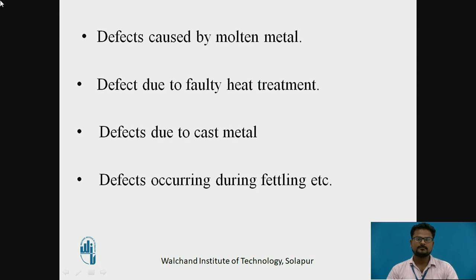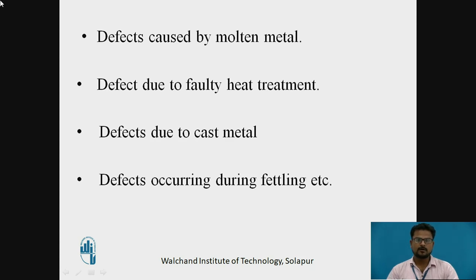Defects caused by molten metal include cold shut and misrun. Cold shut is a defect in which a discontinuity is formed in the casting due to imperfect fusion of two streams of metal in the mold — it appears like a seam or a crack and is common in thin sections of the casting. Misrun occurs when molten metal does not fill the cavity properly. Causes include insufficient molten metal supply. Remedies include improving the gating design and using a proper pouring temperature.